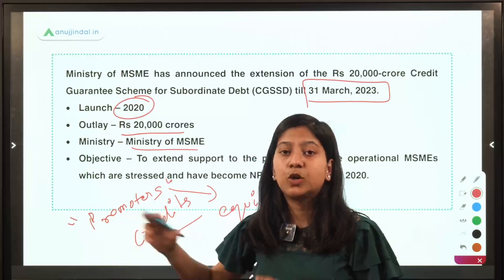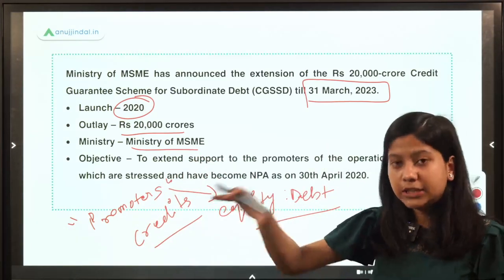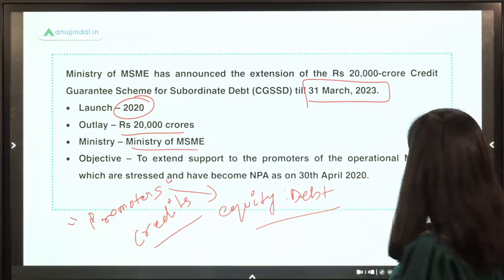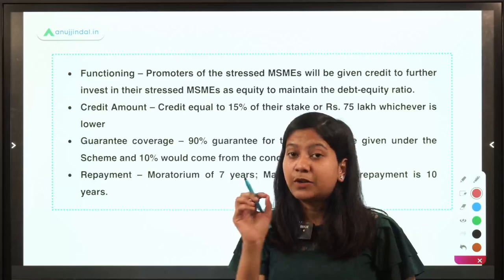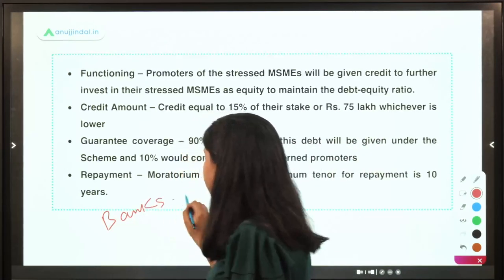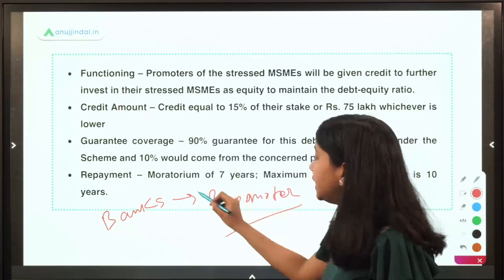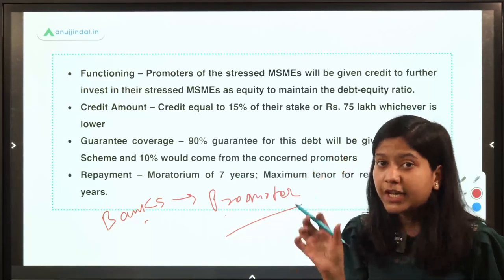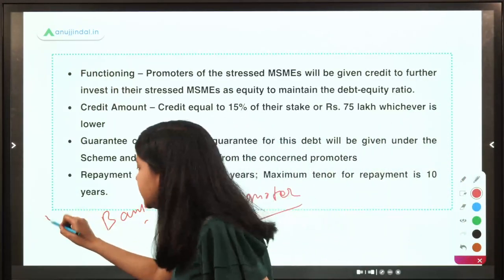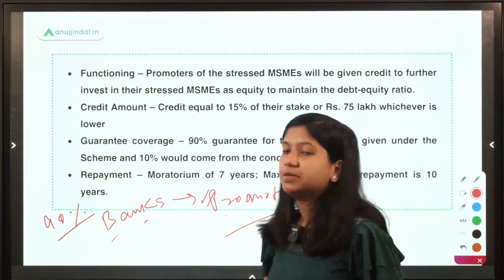Through this, promoters are targeted because they hold stake in the form of equity. If promoters are infusing equity into the MSMEs, it is going to boost liquidity. The Ministry of MSME is not giving the loan directly — it is the banks that provide the loan to promoters. The role of the MSME ministry is to provide a guarantee cover on that loan. If the promoter defaults, 90% of the loan amount will be repaid by the government.